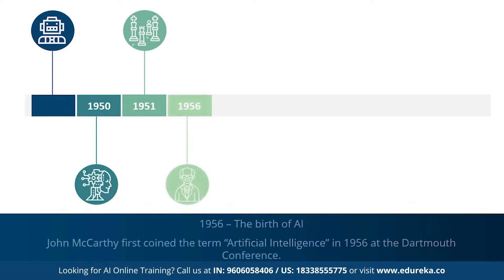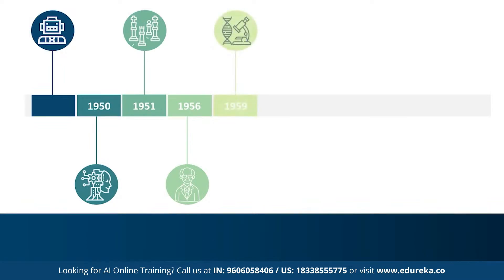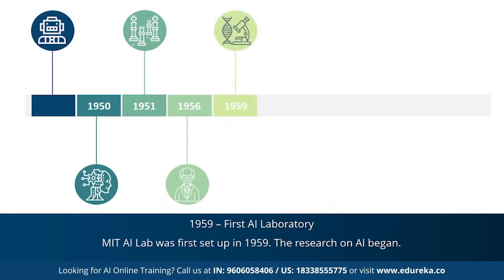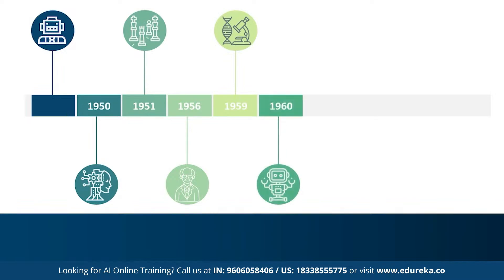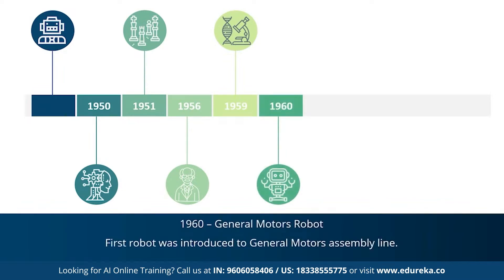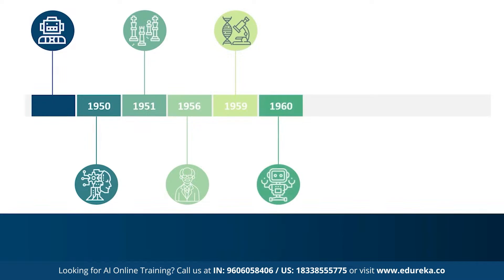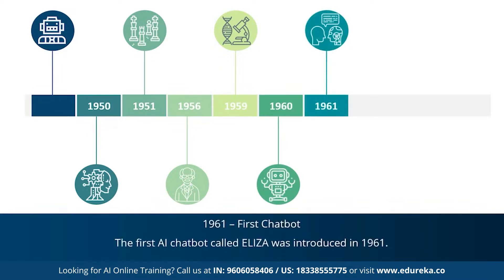1956 marked the most important year for artificial intelligence — during this year, John McCarthy first coined the term artificial intelligence. This was followed by the first AI laboratory, the MIT AI lab, set up in 1959, dedicated to AI research. In 1960, the first robot was introduced to the General Motors assembly line, and in 1961, the first AI chatbot called Eliza was introduced.